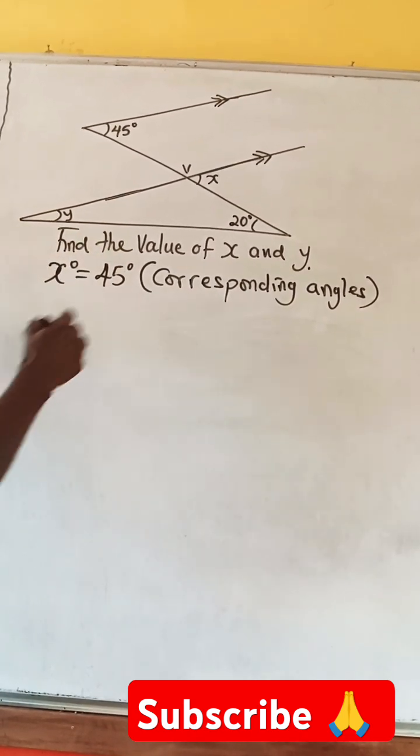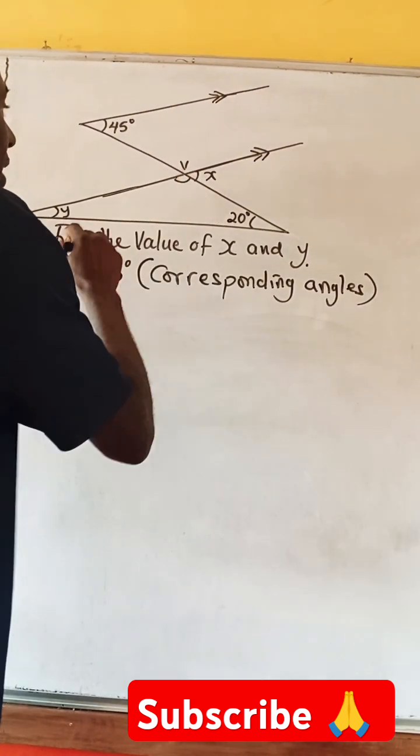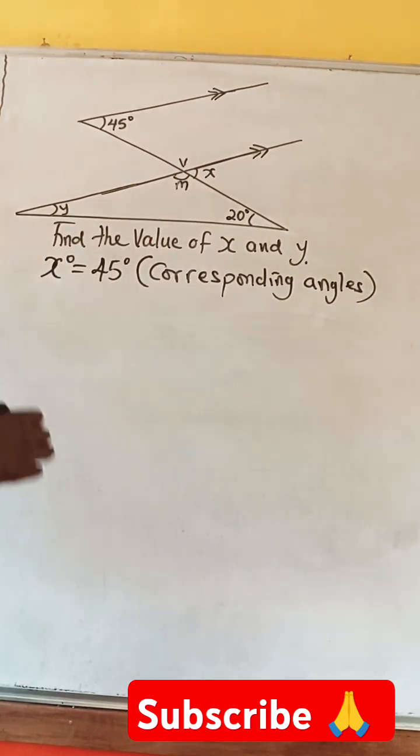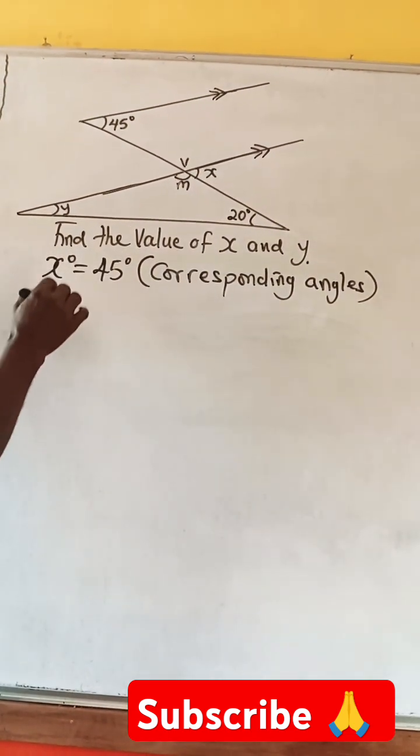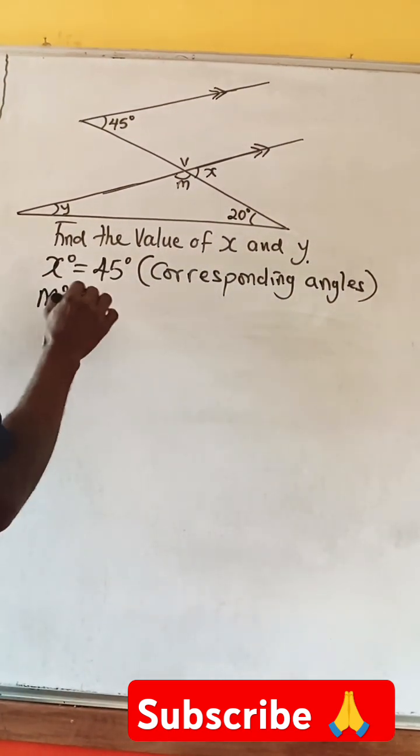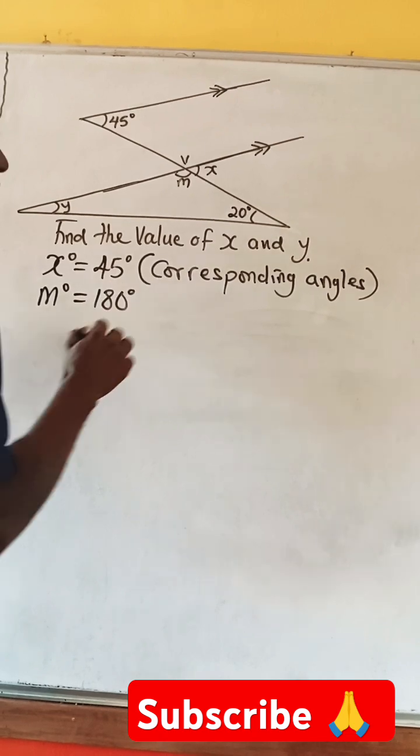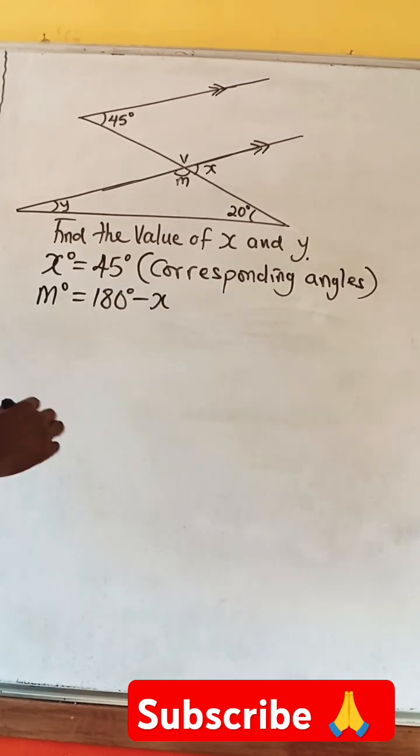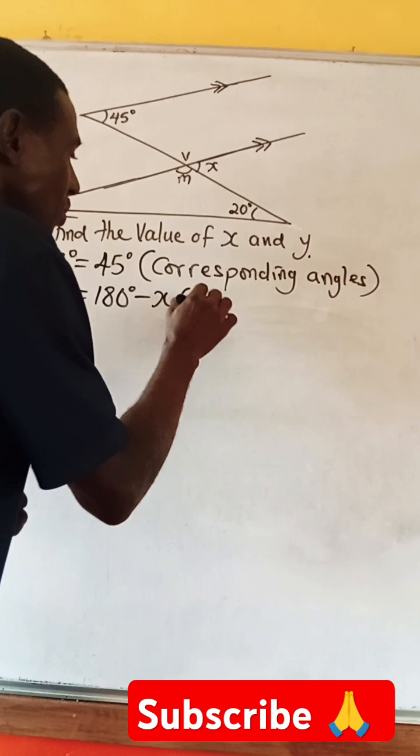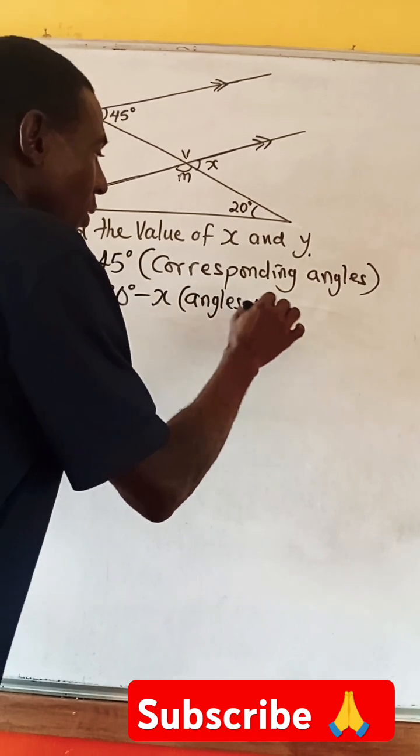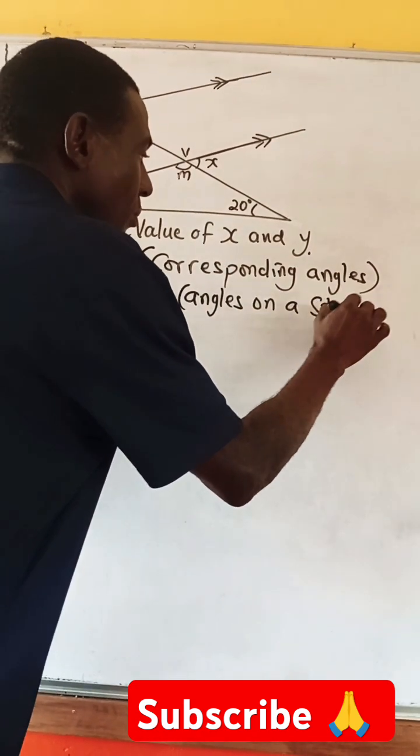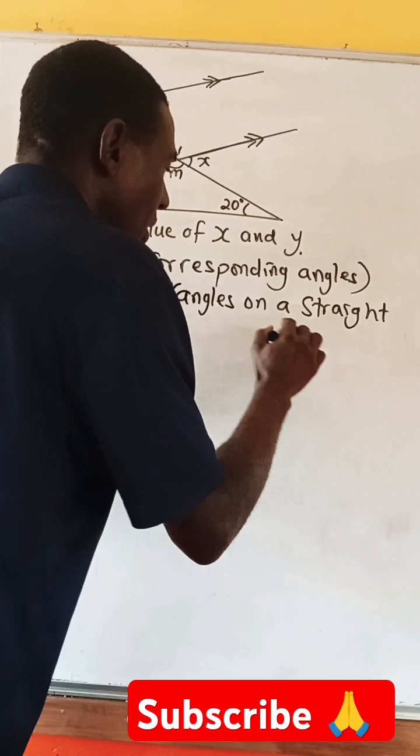Now the next one is Y. But to look for Y, we need this angle. So, maybe we call it M. So, M equals 180 degrees minus the value of X. And this is angles on a straight line.